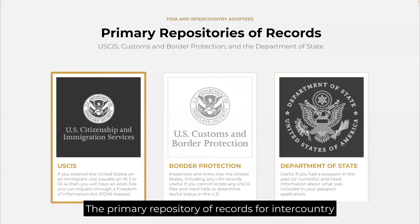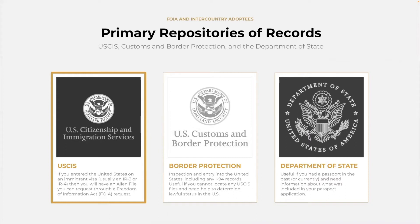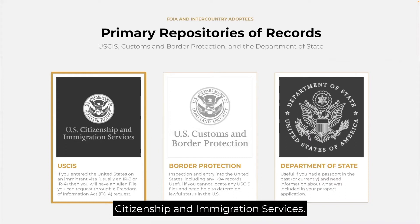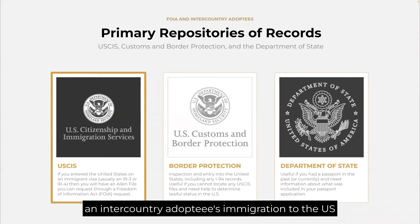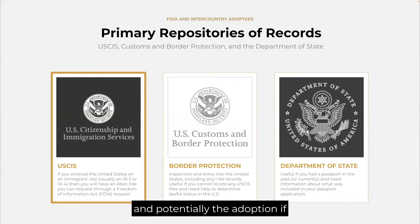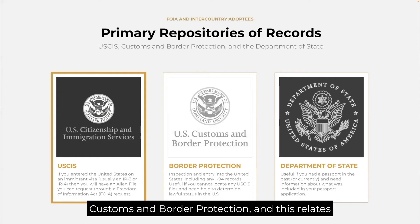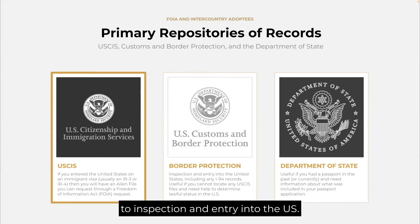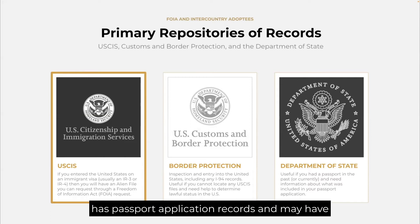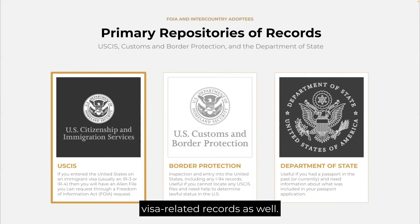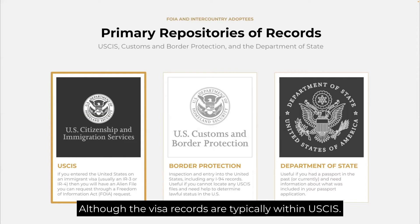The primary repository of records for inter-country adoptees spans three different U.S. federal agencies. The biggest is USCIS, or U.S. Citizenship and Immigration Services — those will have all the records related to an inter-country adoptee's immigration to the U.S., and potentially the adoption if it occurred overseas. There's also U.S. Customs and Border Protection, relating to inspection and entry — typically an I-94 record. And the Department of State has passport application records and may have visa-related records as well, although visa records are typically within USCIS.